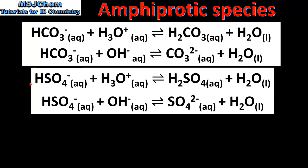Our next example is the hydrogen sulfate ion, which is HSO4-. In the first reaction the hydrogen sulfate ion is accepting a proton from the hydronium ion. By gaining a proton, the hydrogen sulfate ion forms sulfuric acid. In the second reaction the hydrogen sulfate ion is donating a proton to the hydroxide ion, forming the sulfate ion SO4-. So in the first reaction it is acting as a Bronsted-Lowry base and in the second reaction as a Bronsted-Lowry acid.